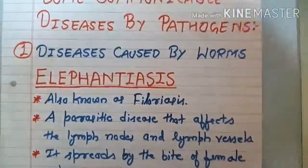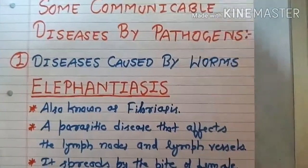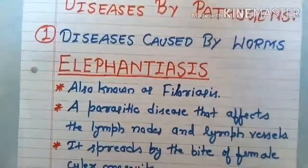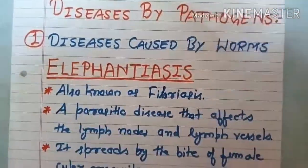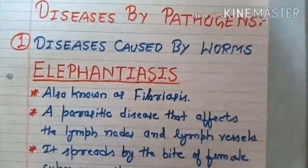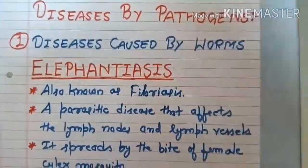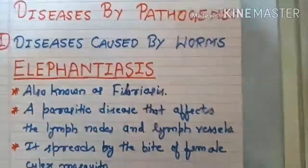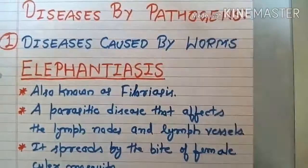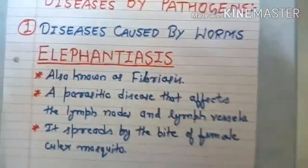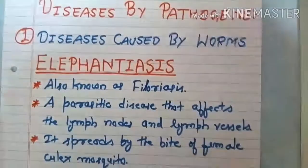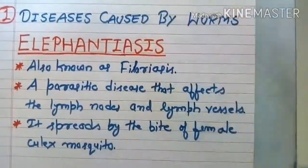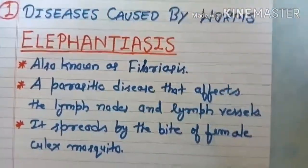Number one: diseases caused by worms. The first example is elephantiasis, also known as filariasis. In this video you will learn what elephantiasis is, how it occurs, what its symptoms are, and what its treatment is.